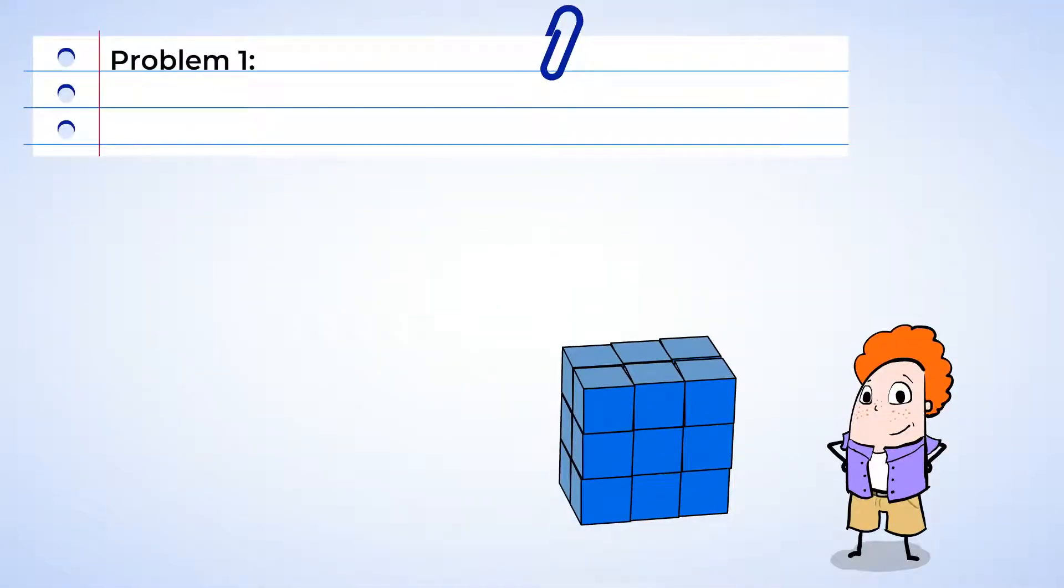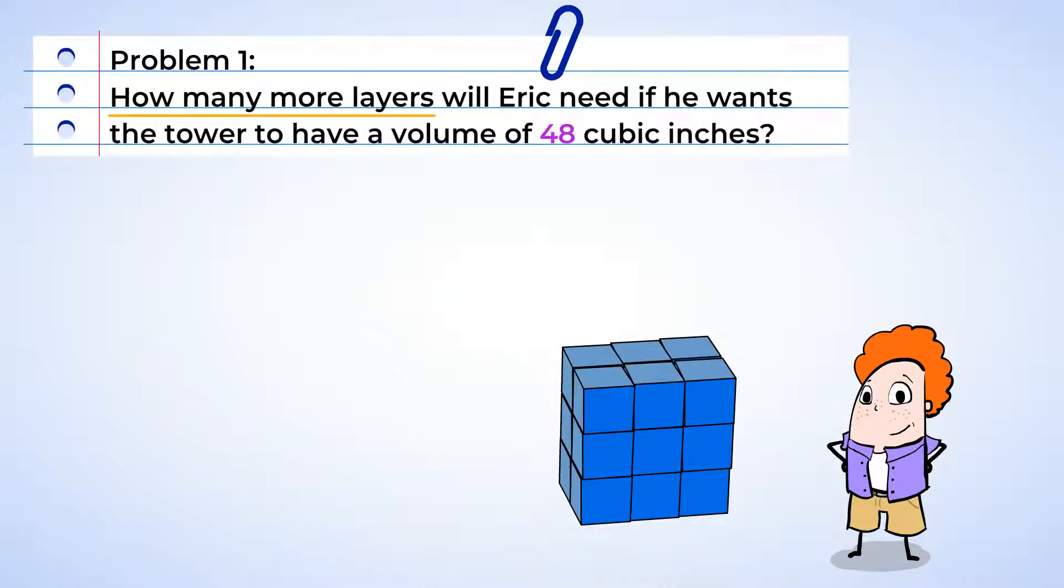Look, Eric's building a tower. This is the base that he's built so far. How many more layers will he need if he wants the tower to have a volume of 48 cubic inches?